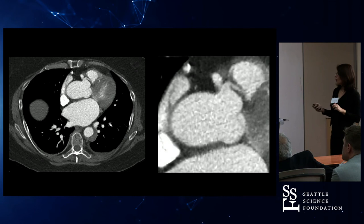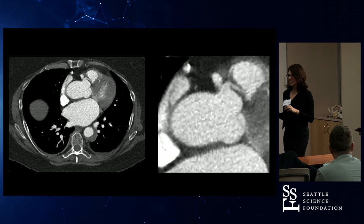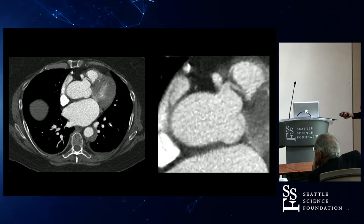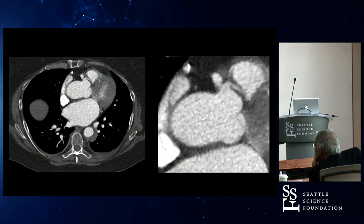Coronary anomalies are super uncommon. But two weeks ago, here at Cherry Hill, I had three — and here they are. There are benign and malignant anomalies. And that doesn't mean they cause cancer — it means one can cause death and one doesn't.